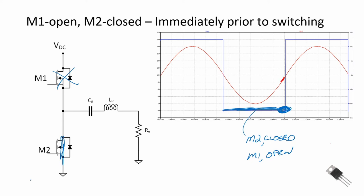And the current is also negative, meaning the current is flowing in this direction. We are going to do a break before make with M2. So we're going to open up M2 before closing M1. The current has to flow somewhere, and so the current that was flowing through M2 is now going to flow through the body diode of M1.